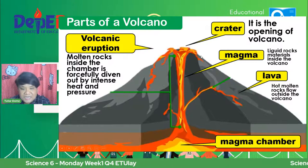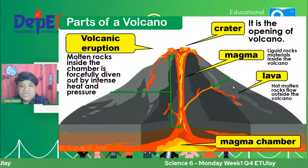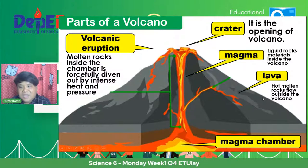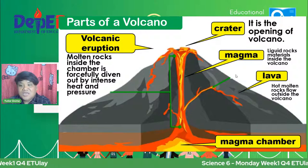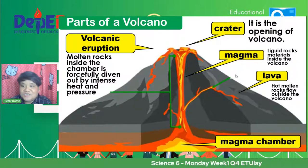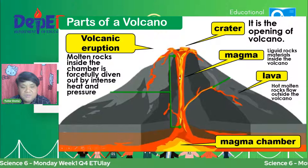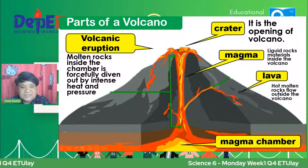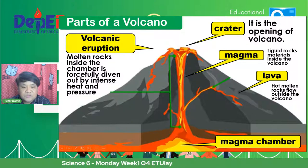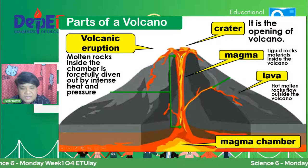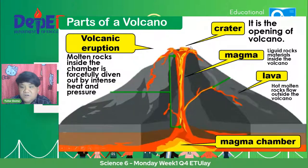Yung pagdaloy ng magma na yun, that is lava ang tawag natin dyan. Pag sinabi natin magma, that is the liquid rock materials inside the volcano. Kapag dumaloy na yung magma sa gilid ng vulkan, parang siyang apoy na liquid part. Pag nakalapag na siya sa lupa, ang tawag naman natin dun is lava — yung dumadaloy na nasa labas. Pag nasa loob pa siya, magma ang tawag, pero pag lumabas na siya at dumadaloy na, nagiging kulay black pag pababa ng pababa, nagiging bato na siya kasi lumamig na. That is lava.